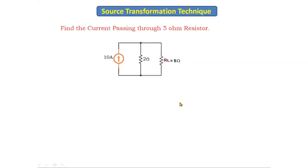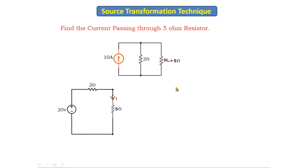Now let's look at an example circuit. The question is: find the current passing through the 5 ohm resistor. We have many methods available, but here I am using source transformation technique since that is our topic. I will first convert the practical current source — one current source connected in parallel with the resistor — into a practical voltage source.